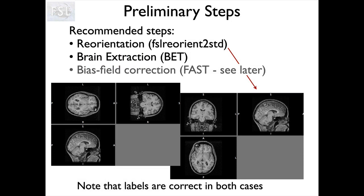Before we use some of these larger tools and pipelines, there are some recommended steps that should always be run. One of them is to reorient your images. There's a tool called FSL Reorient to Standard, which simply reorders the different axes without changing the quality of the image, making it so it's in the standard configuration. For instance, we're used to seeing our coronal in a standard plane, not rotated on its side. This makes registration jobs easier because it starts in a fairly standard orientation.